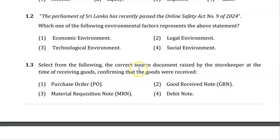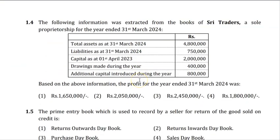Question 1.4: The following information was extracted from the books of Street Traders, a sole proprietorship, for the year ended 31st March 2024. Total assets: Rs. 4.8 million; Liabilities: Rs. 750,000; Capital as at 1st April 2023: Rs. 2,000,000; Drawings: Rs. 400,000; Additional capital introduced: Rs. 800,000. You need to calculate the profit for the year ended 31st March 2024, using a separate sheet.